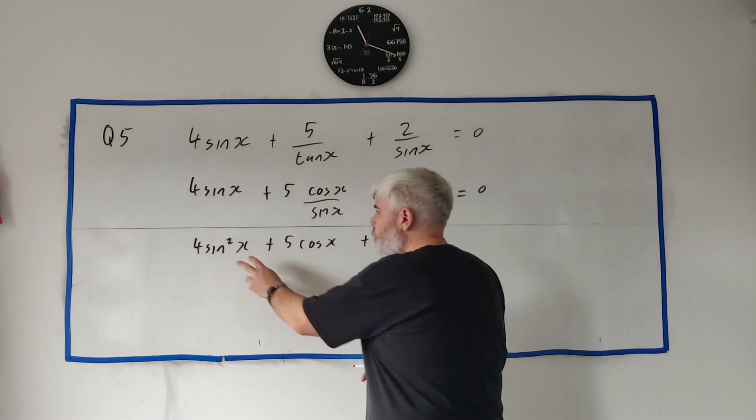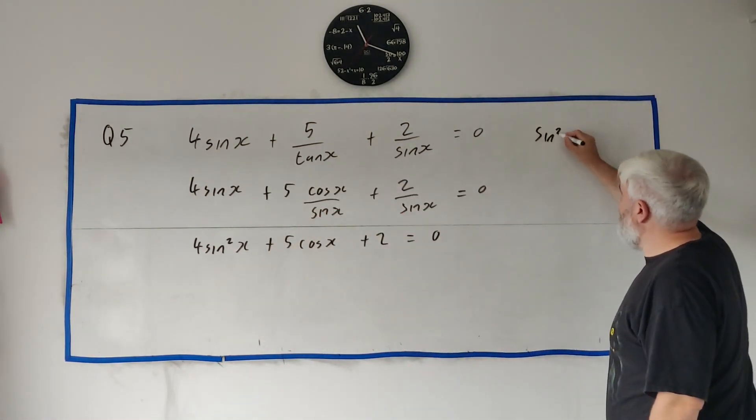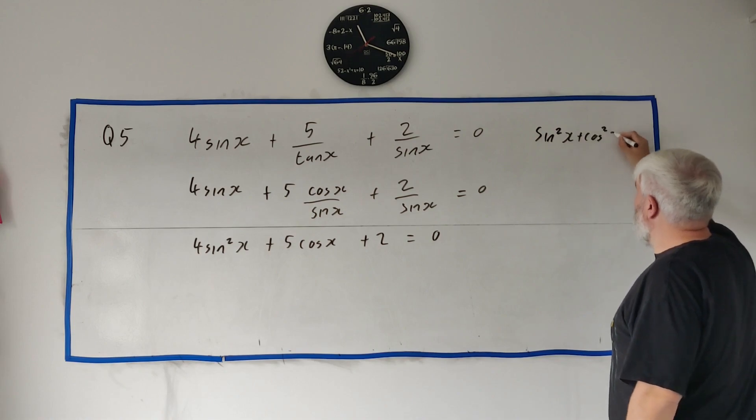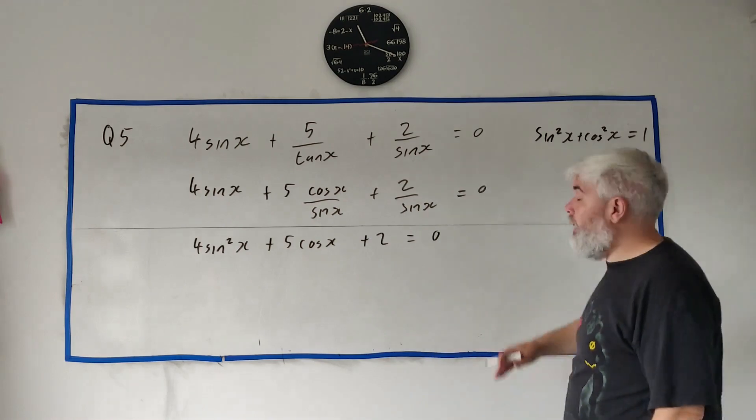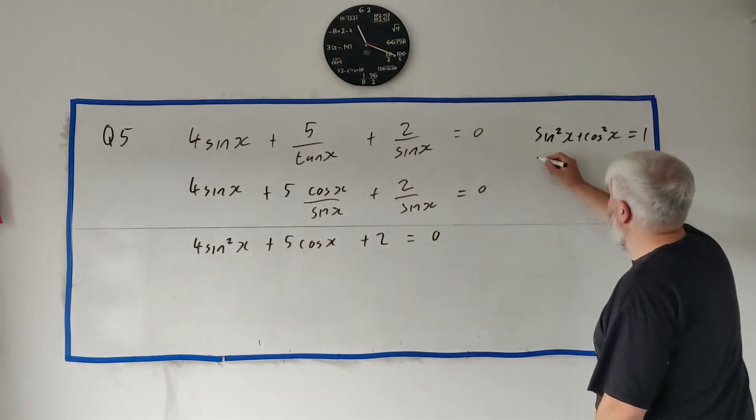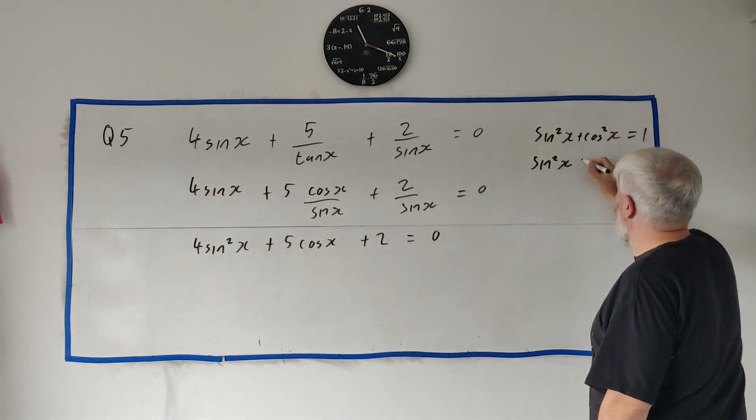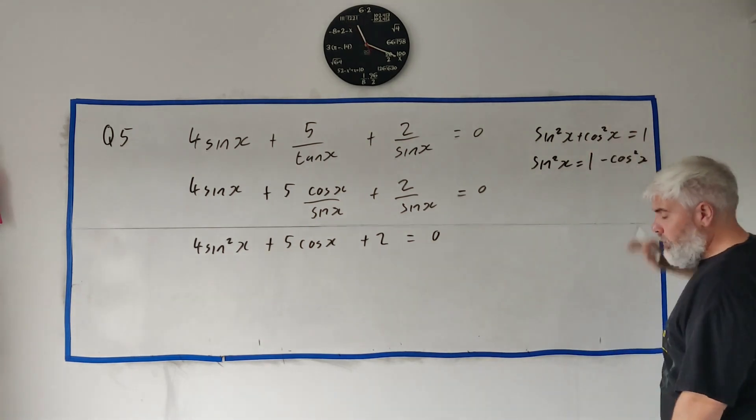Last thing, and it's very important to remember, I'll write it up here: sine squared x plus cosine squared x equals one. That should be number one thing. Trigonometry is based on this. So that means sine squared could just be replaced. Sine squared is just equal to one minus cosine squared. Just take cosine squared away from both sides.